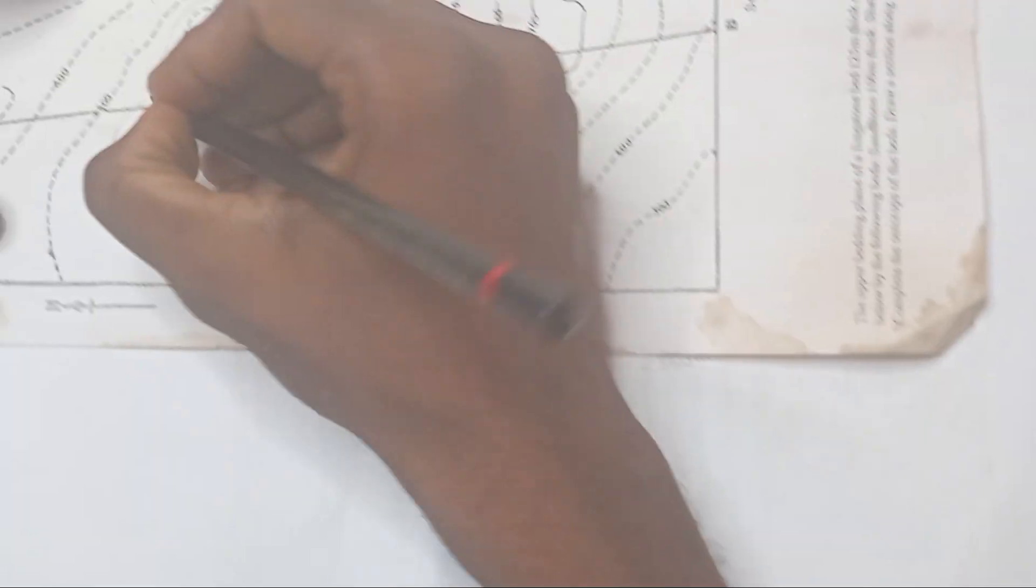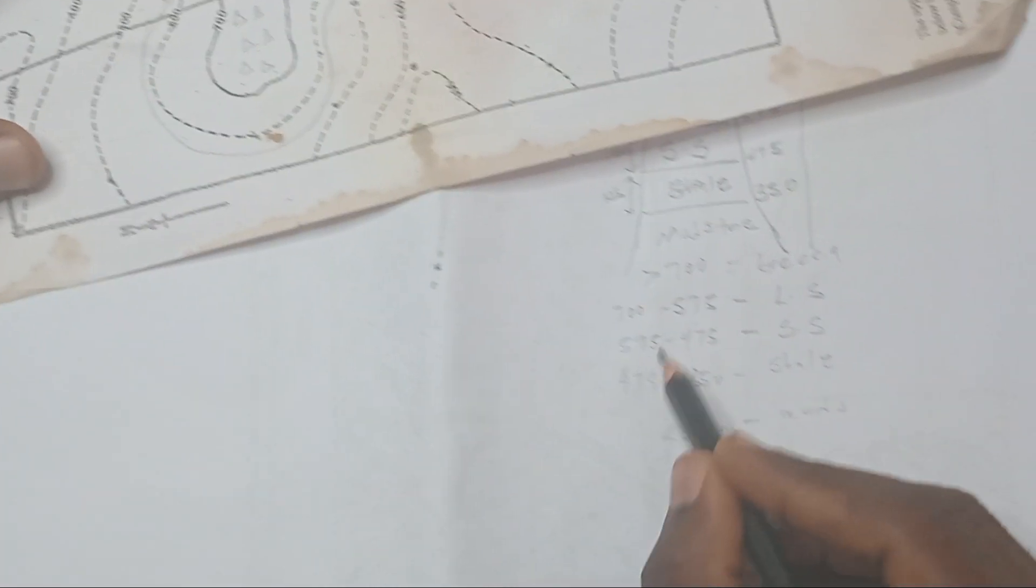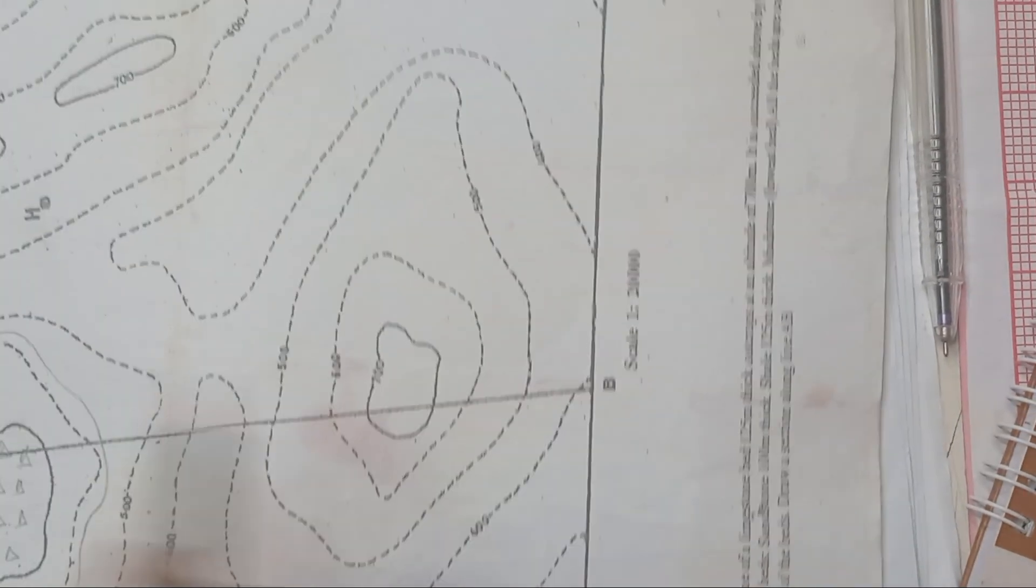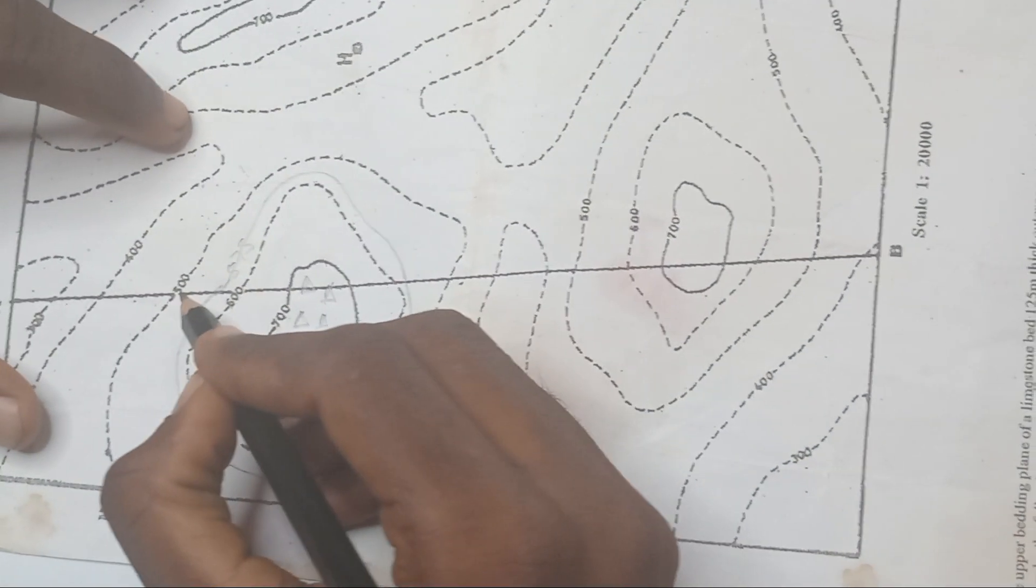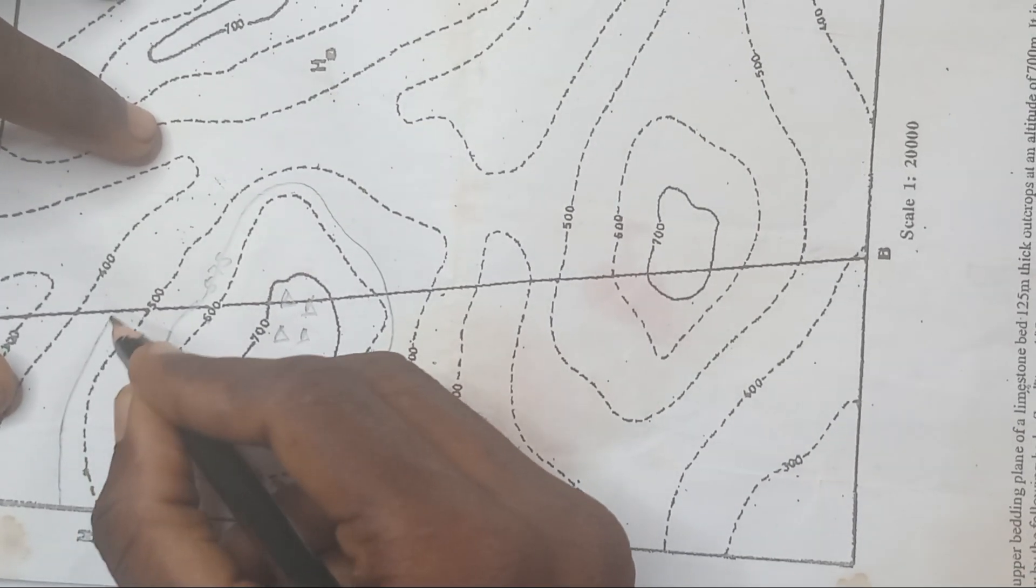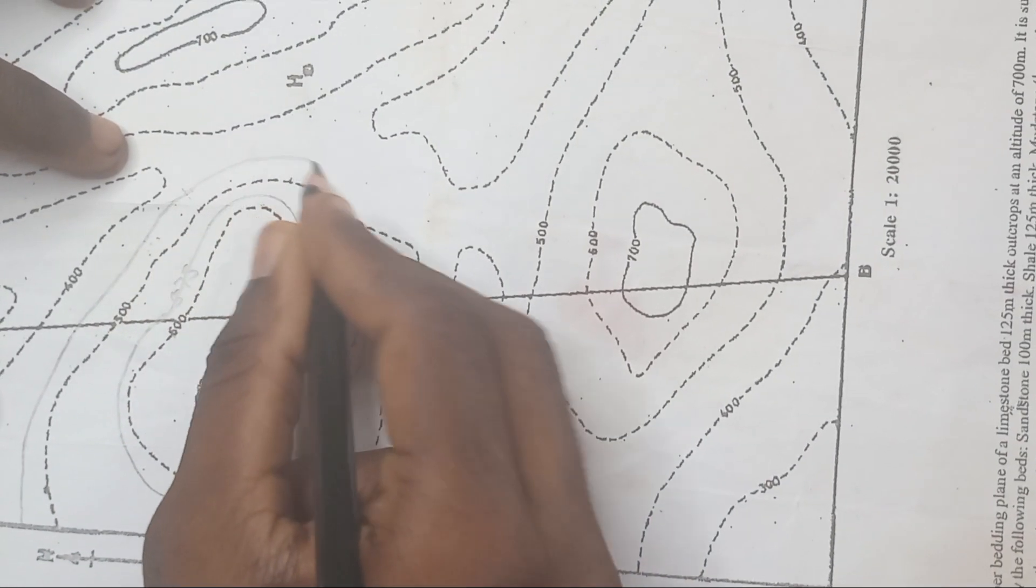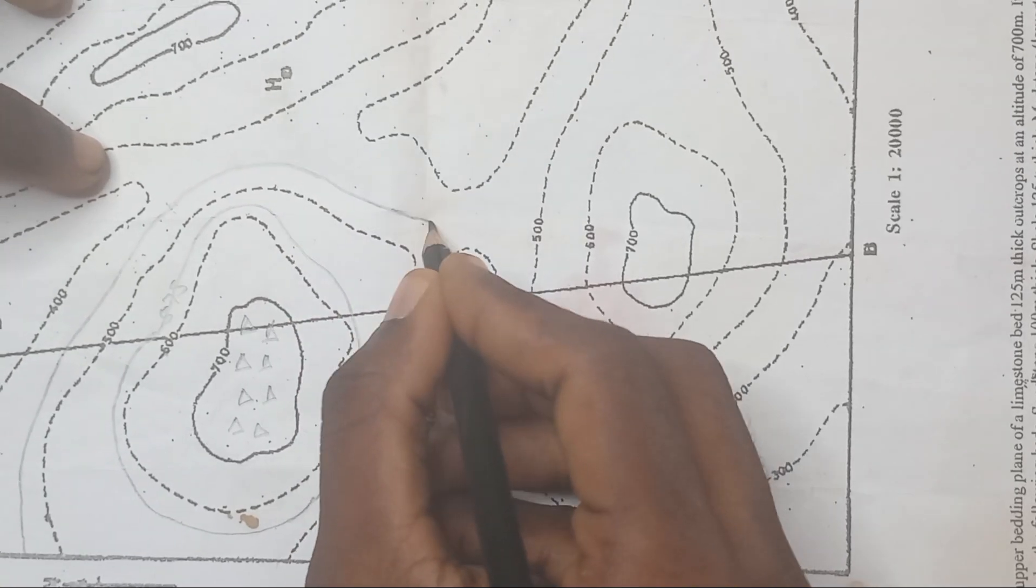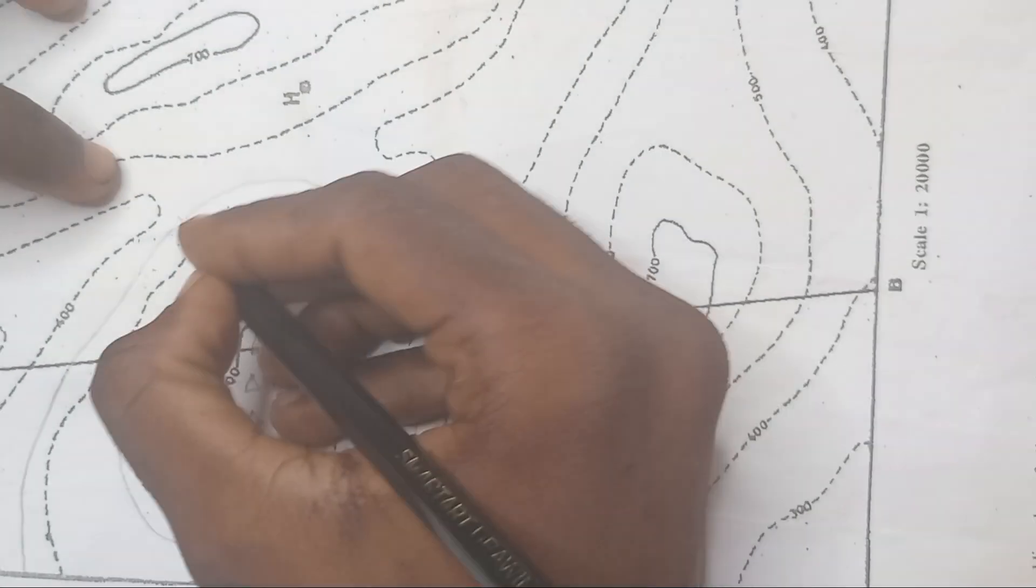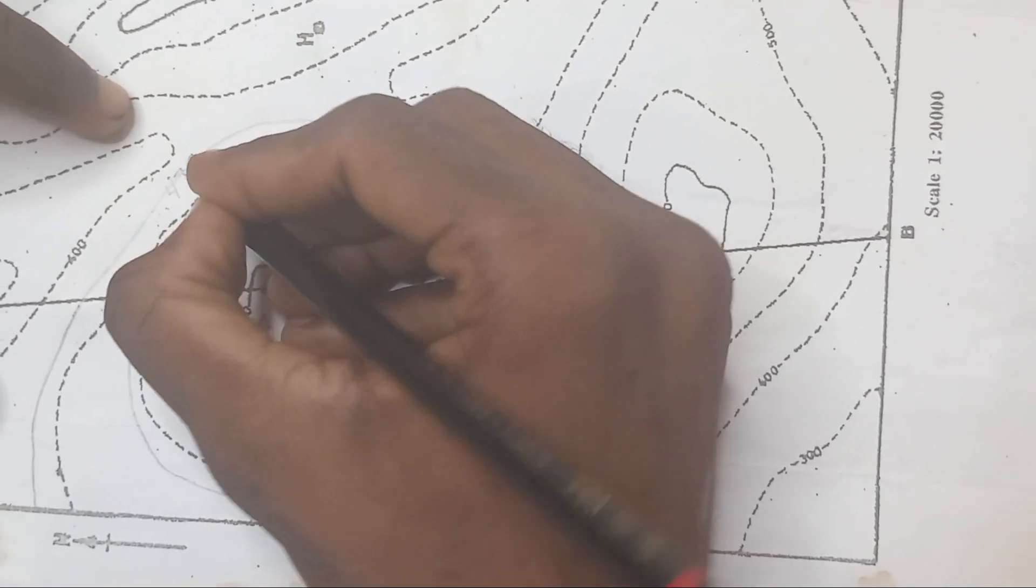Good. The next, we have from, this is 575. The next we have for sandstone, which is 575 to 475. So 475, the higher one is 500. So I'm going to follow the shape of 500. 475. Sharp. You've drawn your 475.